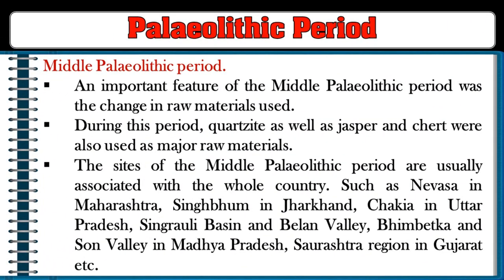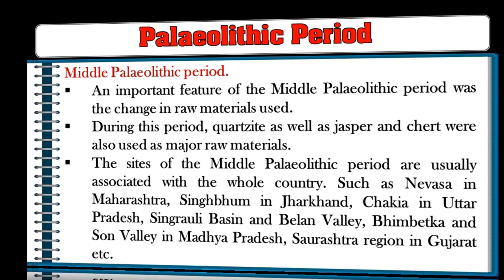An important feature of the Middle Paleolithic period was the change in raw materials — quartzite as well as jasper and chert were used. Sites are found across the country including Nevasa in Maharashtra, Singhbhum in Jharkhand, Chakiya in Uttar Pradesh, Singhrawi basin and Balan Valley, Bhimbetka and Son Valley in Madhya Pradesh, and Saurashtra region in Gujarat.